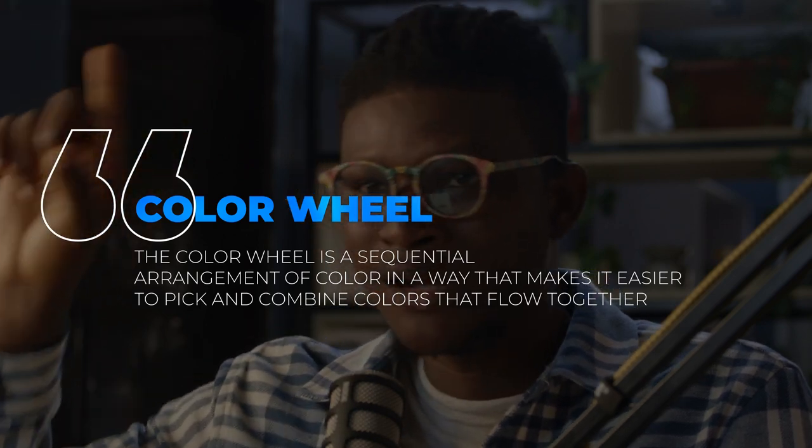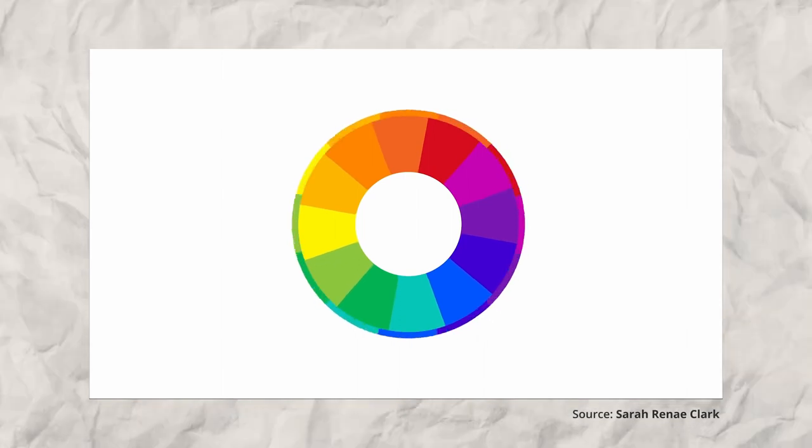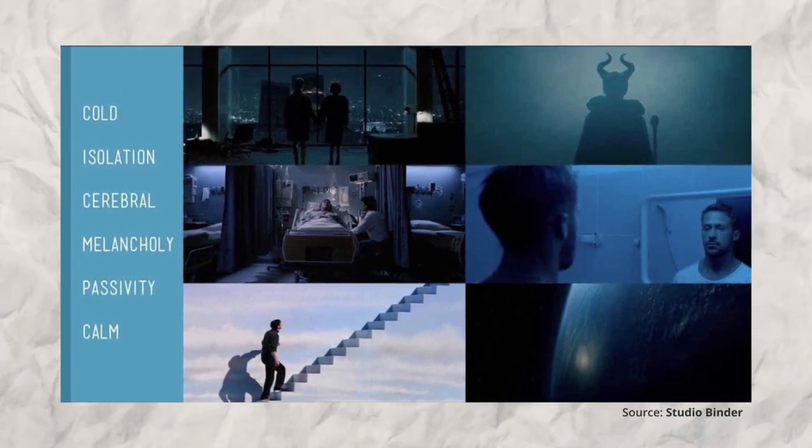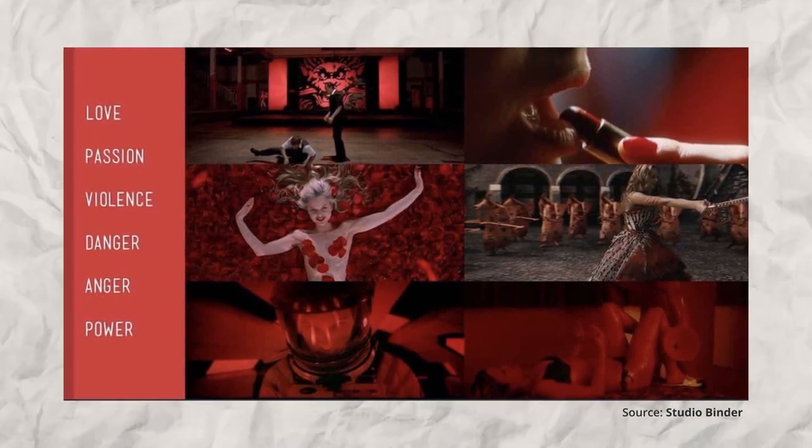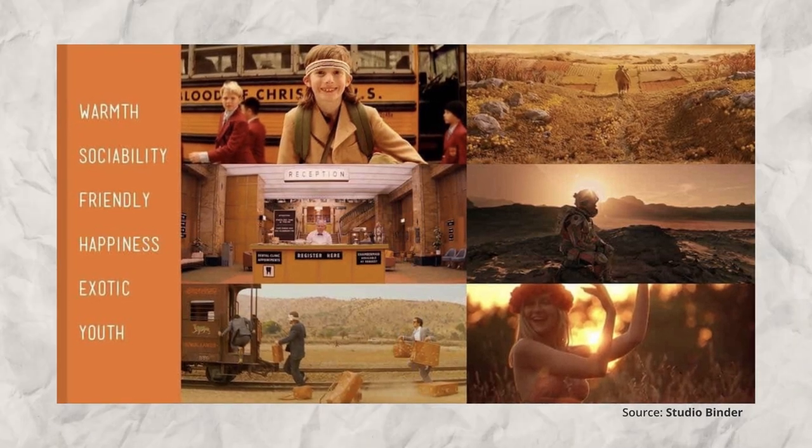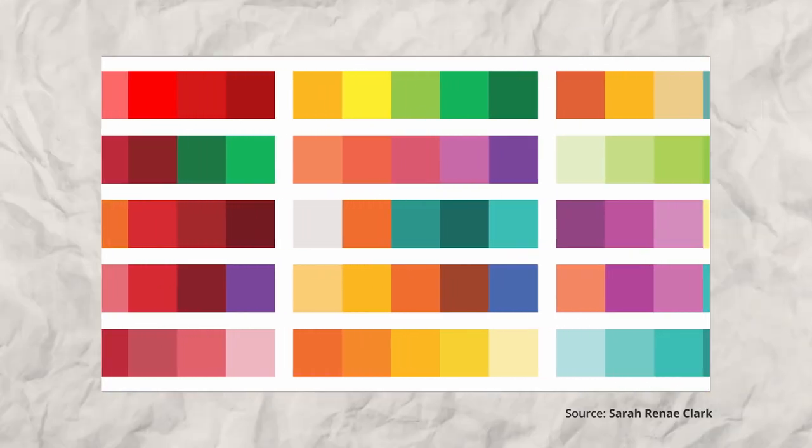Color theory is an idea that a bunch of filmmakers came together to develop, centered around what we call the color wheel — a sequential arrangement of colors around the wheel which makes it easy to pick and combine colors for your films. Subconsciously, whether we like it or not, color affects our perception of a film. Blue is associated with calmness and relaxedness. Red is associated with danger and anger. Orange is associated with warmth, friendliness, and happiness. Green is associated with nature, and can also portray disgust depending on how the filmmaker uses it. Now that we know what these colors mean psychologically, how do we combine them to draw particular emotions from our audience? Because subconsciously, your audience is affected by your color decisions if you use them intentionally.